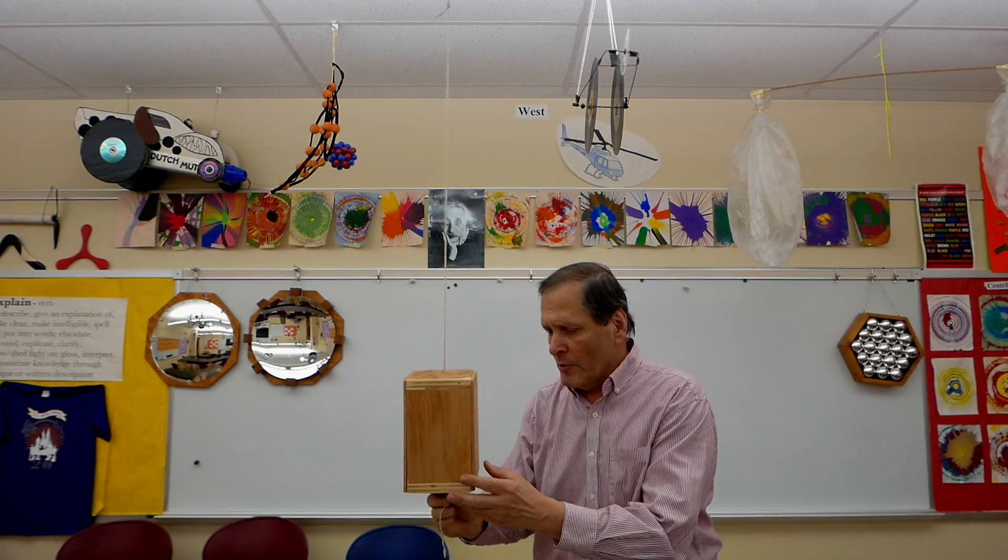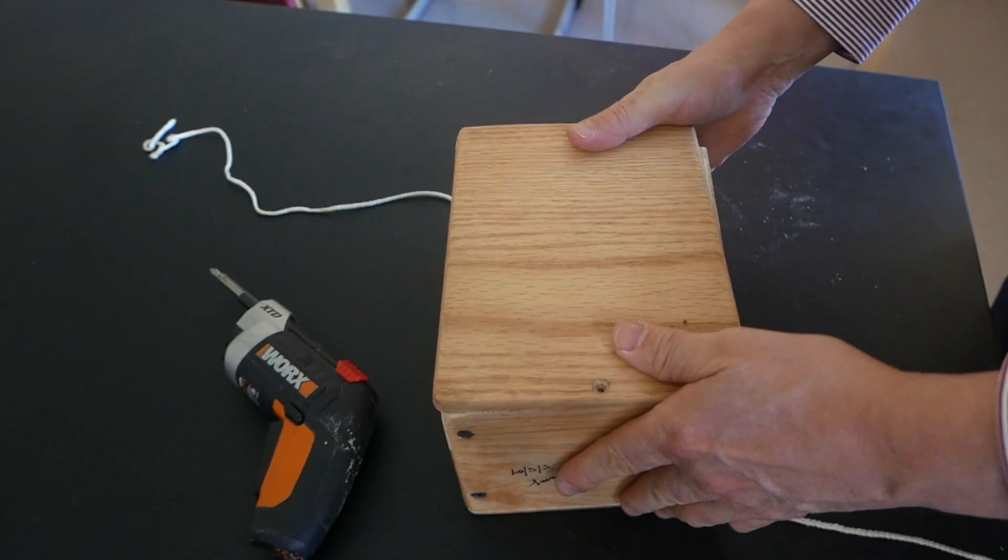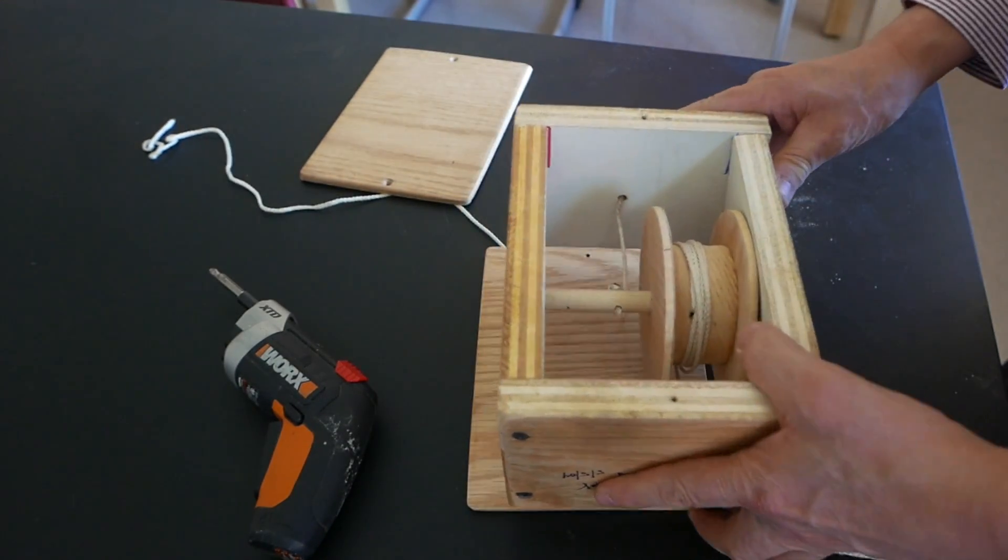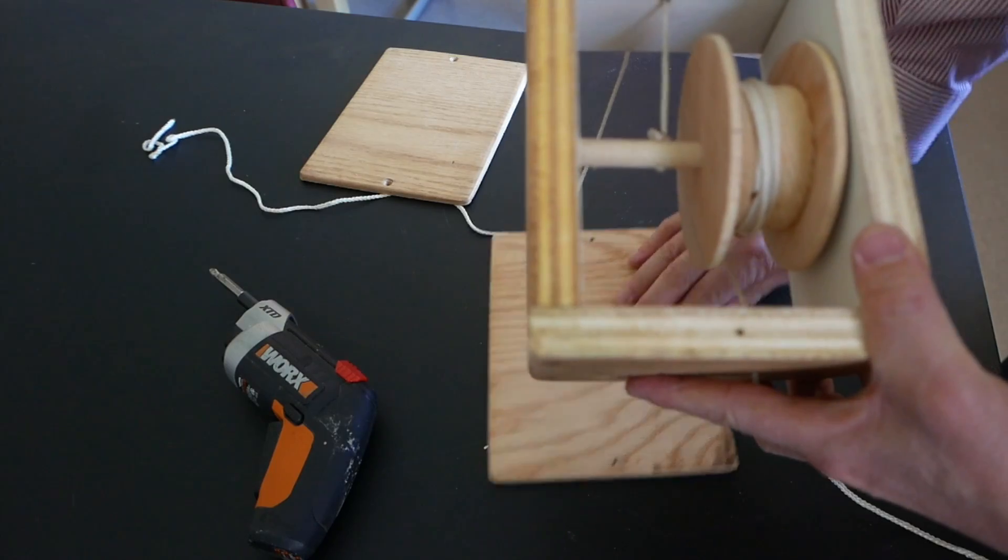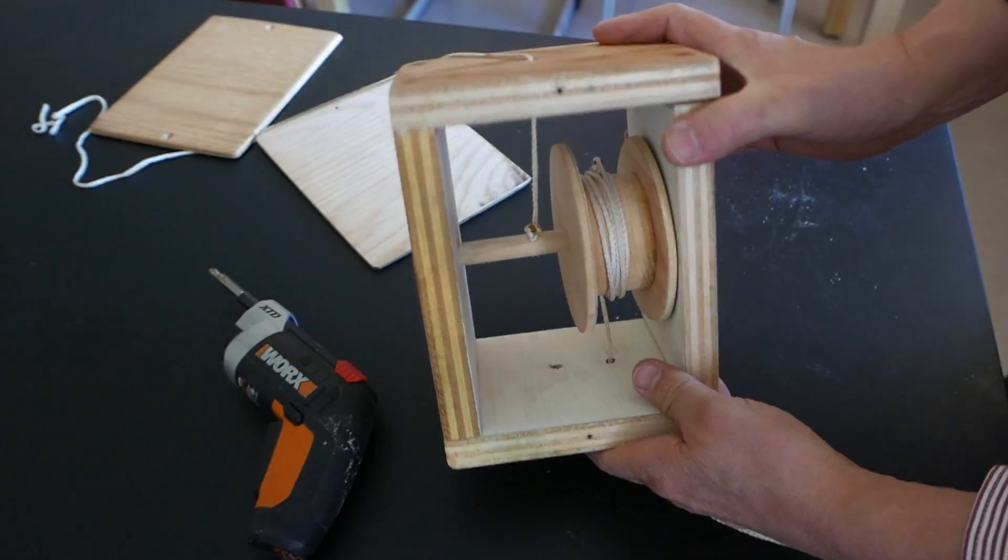This box is the easiest to move of them all. First, I'll remove the side panel so you can see a little bit better. Notice how large the wheel is in comparison to the size of the axle. Now I'll pull the side off here so you can see that a little bit better.